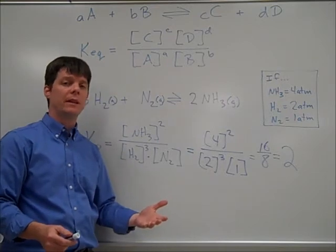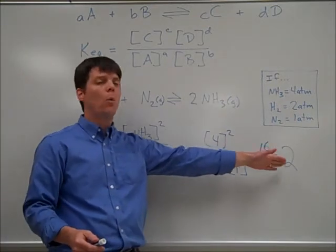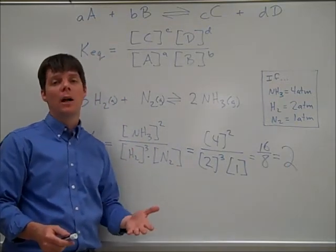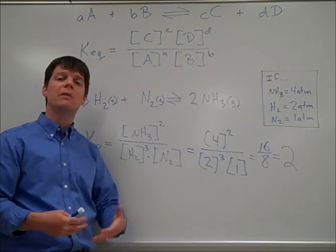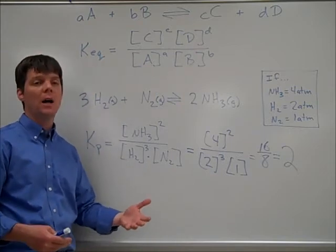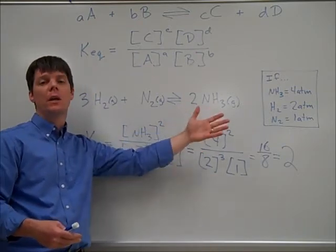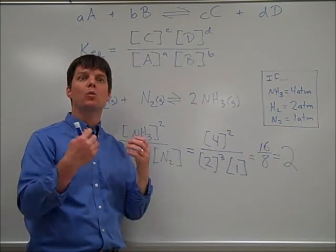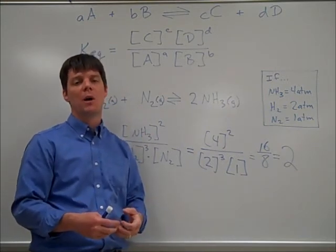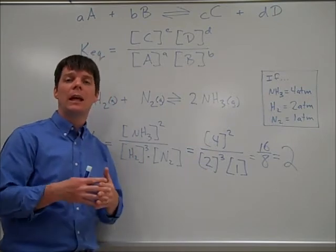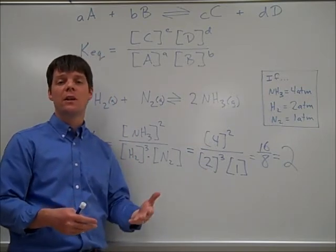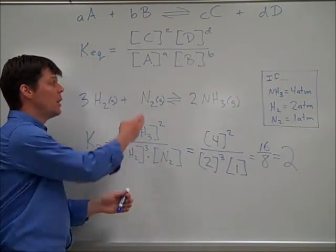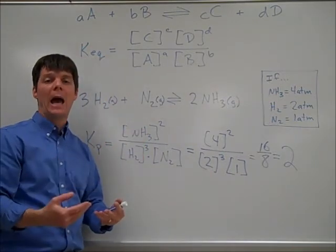Now what does this number indicate? If equilibrium constants are greater than one, it means we're favoring the formation of products — in this case, ammonia. If we see really large numbers, for example a thousand, this means we're strongly favoring product formation. If equilibrium constants are less than one, the process being favored is the reverse reaction, which would reform the reactants.